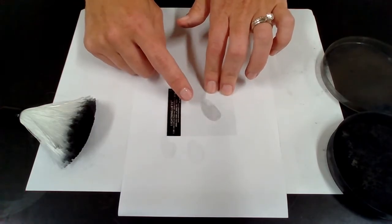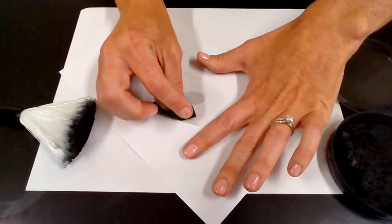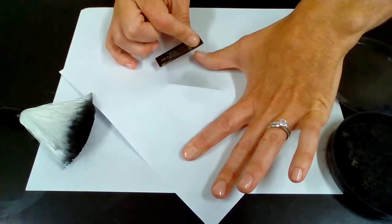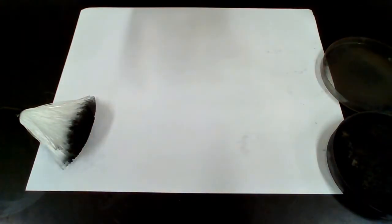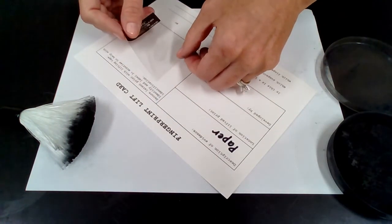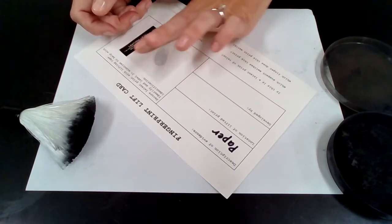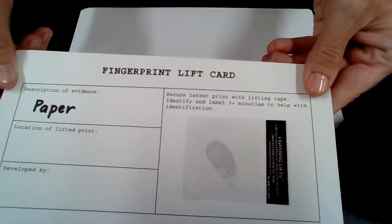I'm now going to carefully lift this up off the paper. Okay, set my evidence off to the side. Get my lift card. Now if I apply this from one side to the other to press out air bubbles, I have now lifted that print from a paper source and I have it available to analyze later.